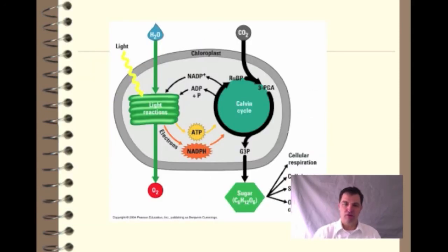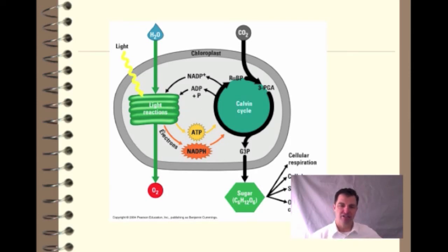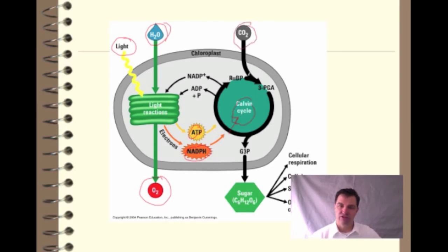Here's a summary showing the light reactions and the dark reactions together. Out of my light reactions comes O2, I'm taking in light and water, I'm making ATP and NADPH. Those are used to drive the Calvin cycle — I need CO2 and Rubisco to do that — and what I get out of that is sugar, which can then be used in cellular respiration.